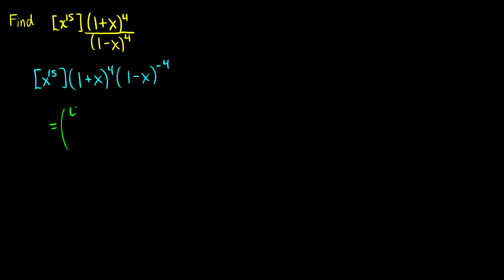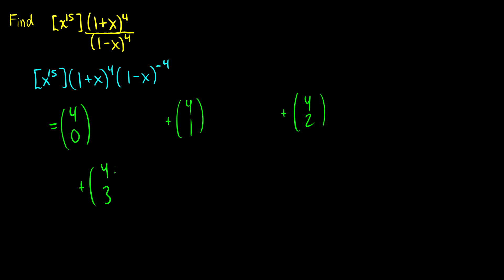In the first case we can choose 0 of the x's. In the second case we're going to choose 1 out of the 4. Then we choose 2 out of the 4, then 3 out of the 4, and finally 4 out of the 4. The rest of our x's we're going to get from (1 - x)^(-4).